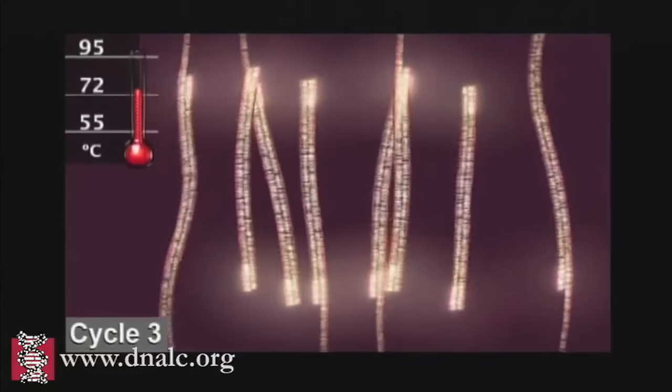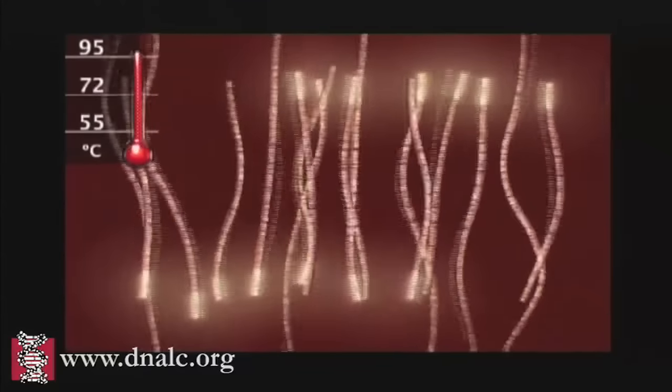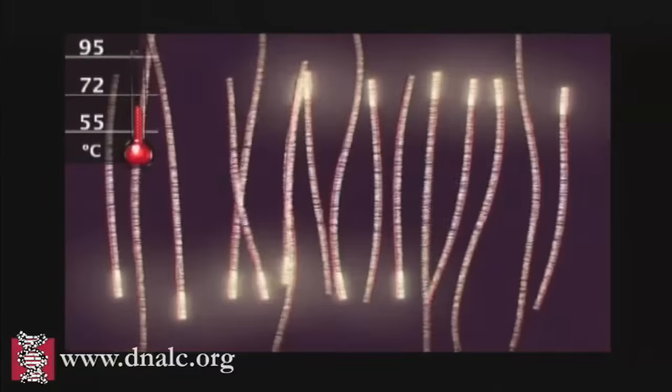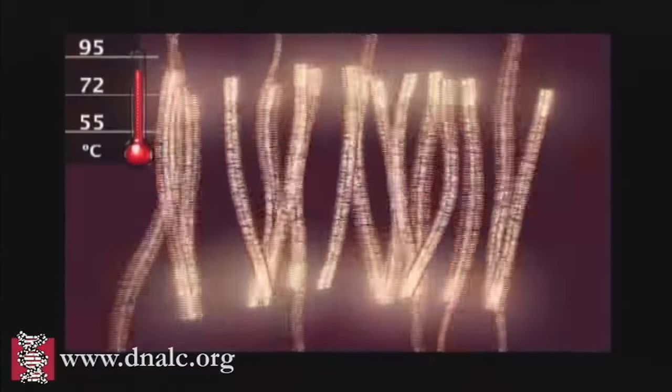After three cycles, the target sequence defined by the primers begins to accumulate. After 30 cycles, as many as a billion copies of the target sequence are produced from a single starting molecule.